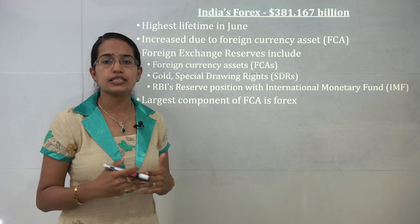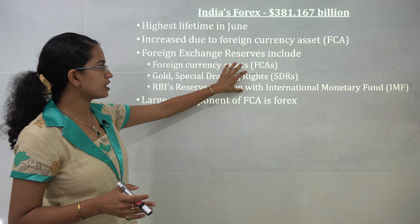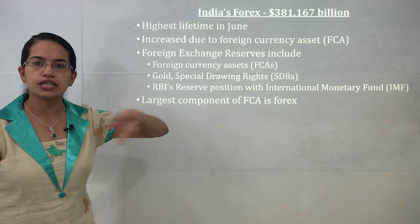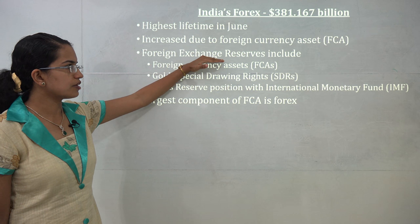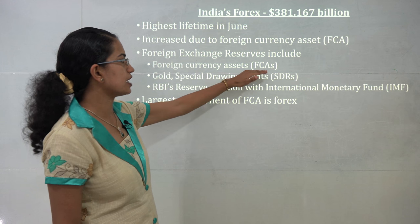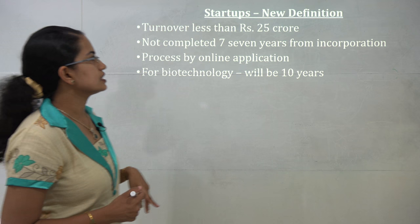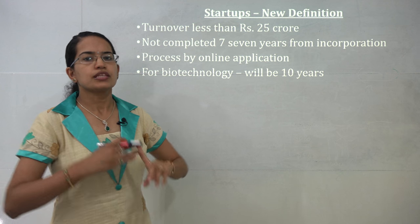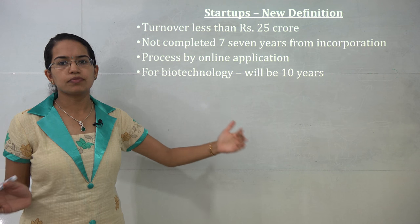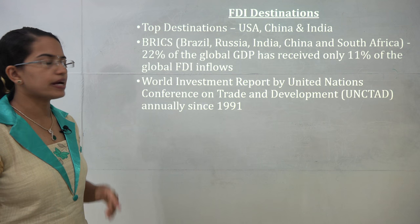In June, India reached its highest forex reserves. India's forex reserves are made up of 3 components: foreign currency assets, Special Drawing Rights, and the reserve position with the IMF. These three together constitute foreign exchange reserves, of which the foreign currency asset is the largest component. An increase in FCA led to June's forex being the highest ever recorded. A new definition has been given to startups: turnover less than 25 crores and 7 years from incorporation qualify as a startup. For biotechnology firms, this duration is 10 years, and all applications can be filed online.